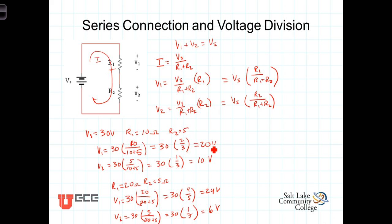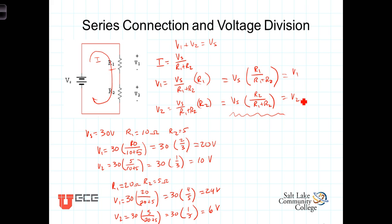In circuit analysis and in electrical engineering in general, it's very common to have resistances in series across which we're dropping voltages. I don't ask you to memorize very many things, but these two formulas, known as the voltage divider formulas, you're going to want to memorize. You'll probably memorize them inadvertently anyway. The important point is to realize that voltage is proportional to the resistance — V1 is proportional to R1, and V2 is proportional to R2.